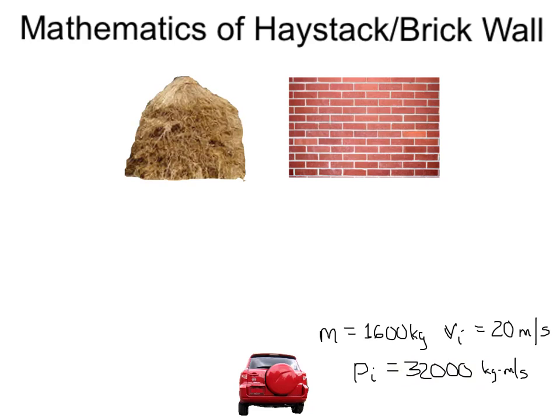Recall that both the haystack and brick wall change my momentum to a final momentum of 0. And so that means the impulse provided by the haystack and brick wall would also be the same, since they both changed my momentum from 32,000 to 0.